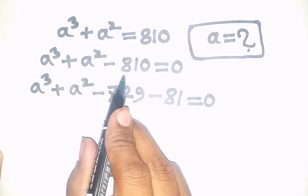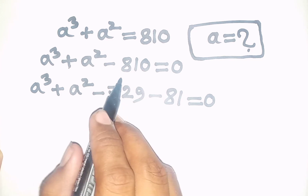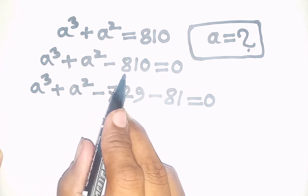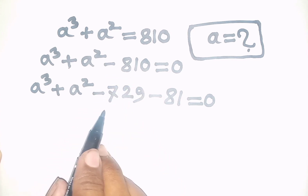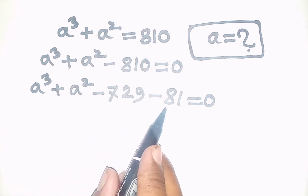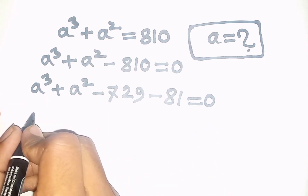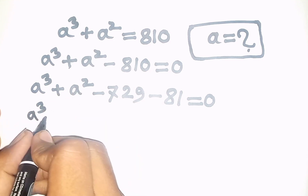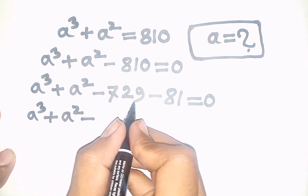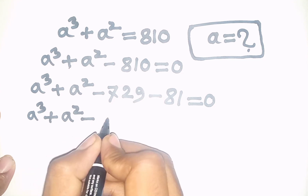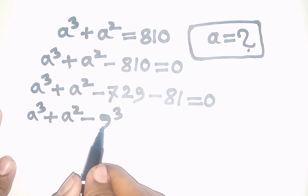Pay attention here. The nearest cubic number to 810 is 729. So we can write here minus 810 is the same as minus 729 minus 81, then is equal to 0. Now we can write here a³ + a² minus 729, and minus 729 is the same as negative 9³.